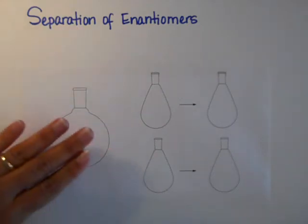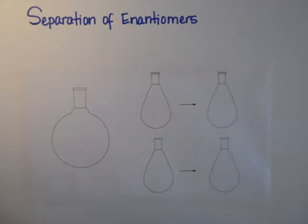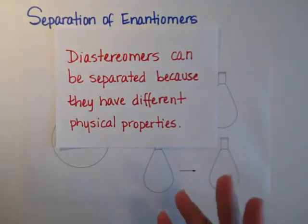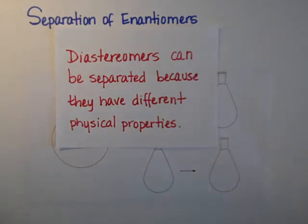So what we have to do is actually convert enantiomers into diastereomers. Because diastereomers have different physical properties, they're going to be much easier to separate than if we had the enantiomers.